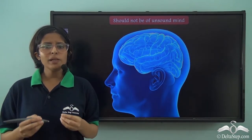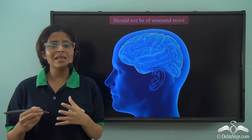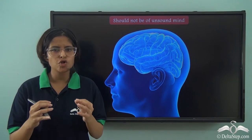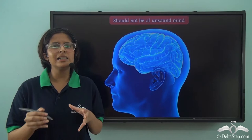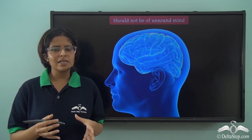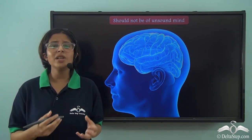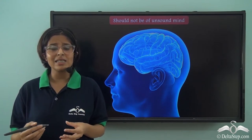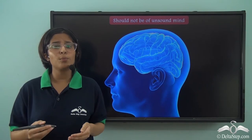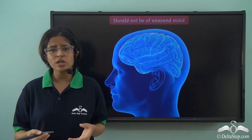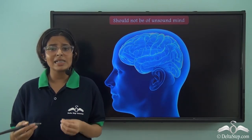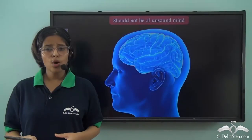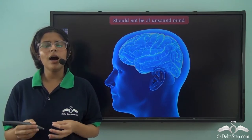The eligibility criteria also bars people of unsound mind from contesting elections. A sound person is someone who takes rational and logical decisions. The term unsound mind has not been clearly described in the constitution, but it is understood to refer to someone having mental illness or insanity. The framers didn't want people with mental illnesses to bear the huge responsibilities of a Lok Sabha member. Considering that about 150 million people in India suffer from severe mental illnesses, this raises questions about whether it adds to the stigma around mental illness.